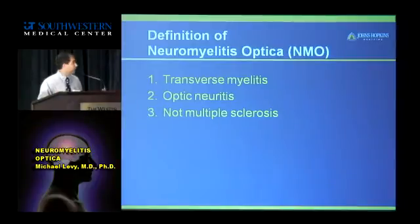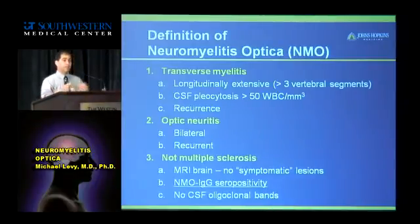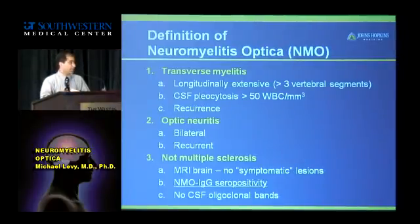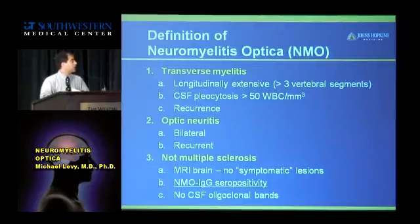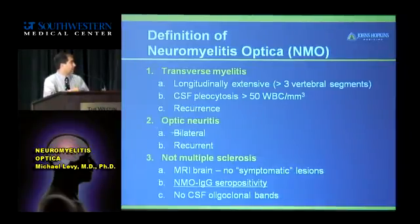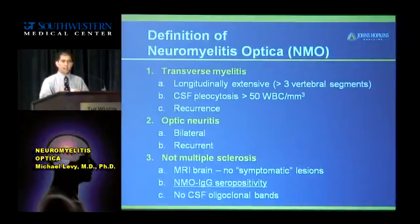It's really hard to rule out MS, so the Mayo folks have come up with criteria to help us do that. In NMO, you typically have longitudinally extensive lesions — long lesions in the spinal cord extending at least three vertebral segments. They're typically much more inflammatory and much more recurrent; you can have lots of lesions per year. Optic neuritis tends to be bilateral, though it doesn't have to be, and it tends to be recurrent. I have patients come back every three or four months with another lesion in their optic nerve.